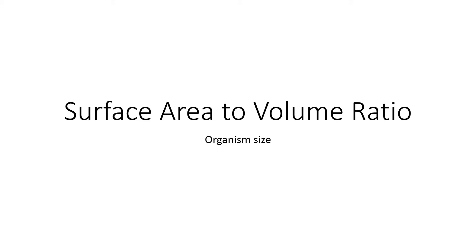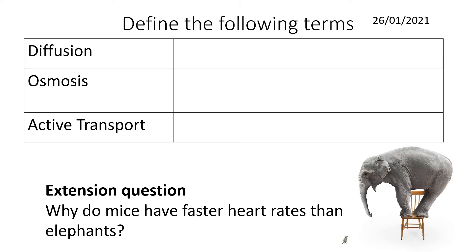This is an A-level biology presentation on surface area to volume ratio. To get started, there are three main methods for the movement of substances covered in the GCSE specification: diffusion, osmosis, and active transport. All you have to do is come up with a definition for each one. The extension question is: why do mice have faster heart rates than elephants? We'll explore that as we go through the presentation. Pause the presentation now, come up with your definitions, and when you're ready you can restart.